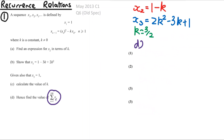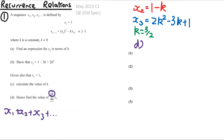For part (c), we're told x3 = 1, so 2k² − 3k + 1 = 1, giving 2k² − 3k = 0. Factorising: k(2k − 3) = 0, so k = 0 or k = 3/2. Since k ≠ 0, we get k = 3/2.